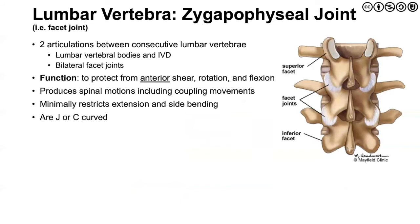The facet joints are also referred to as zygoapophyseal joints — those terms are synonymous. The articulation is made up of two consecutive lumbar vertebrae: the lumbar vertebral bodies, the intervertebral disc, and the bilateral facet joints. The facet joint is made up of paired inferior facets of the vertebra above with the paired superior facets of the vertebra below. The function of this is to protect from anterior shear. The inferior facet joints make contact with the superior facet joints, limiting that motion. The same occurs with rotation and flexion — there is a bony hard limitation to exaggerated motion in these directions.